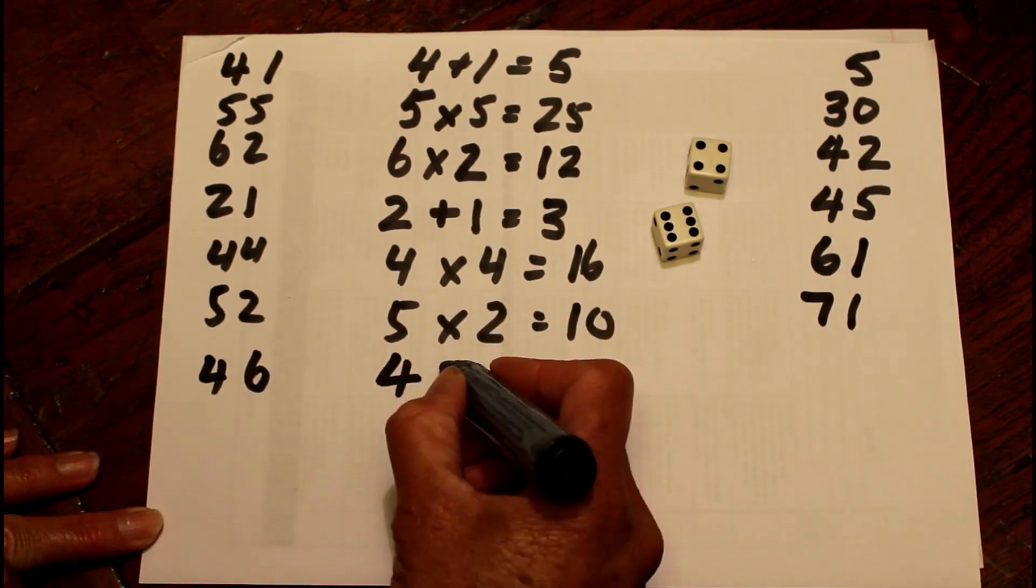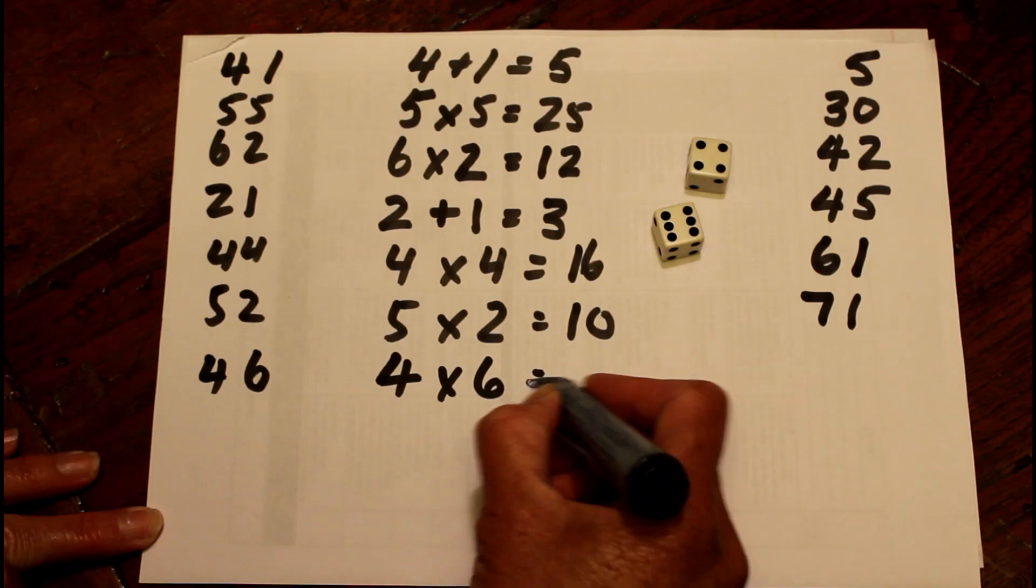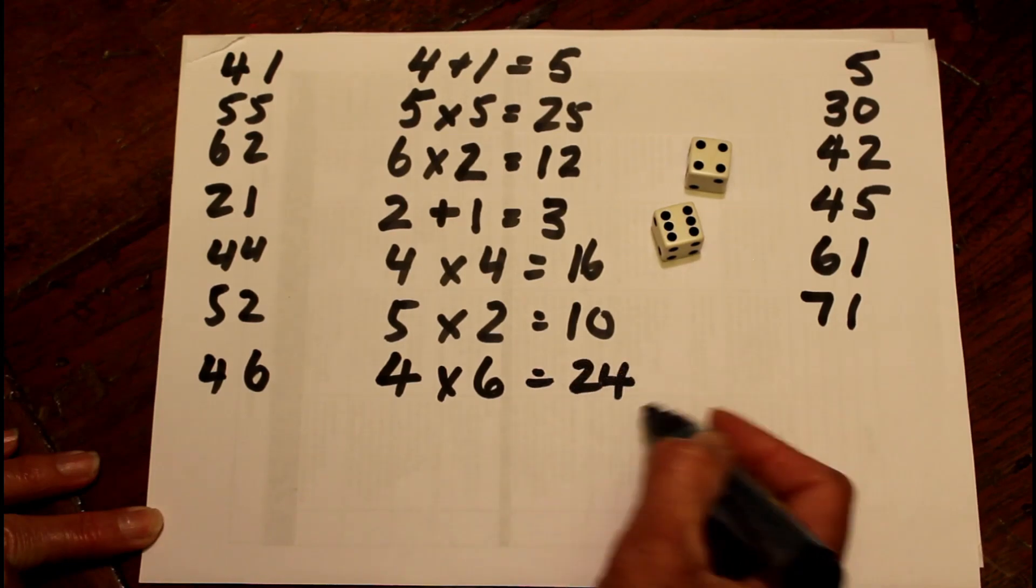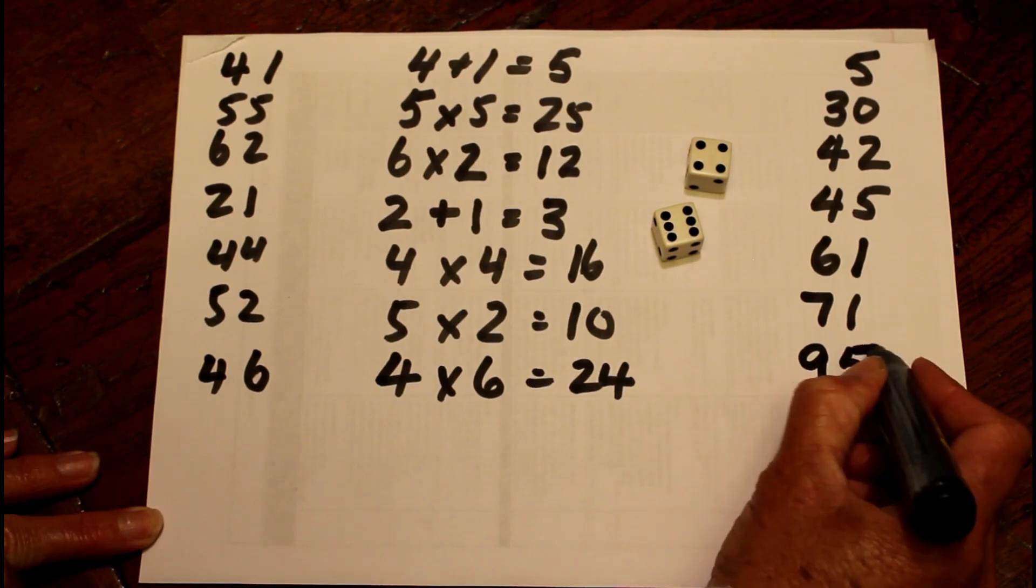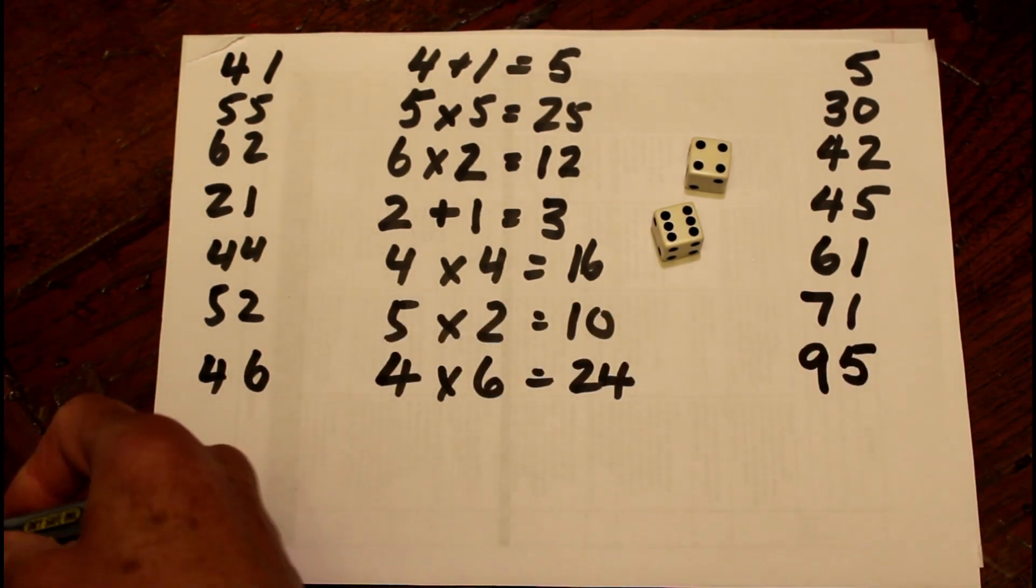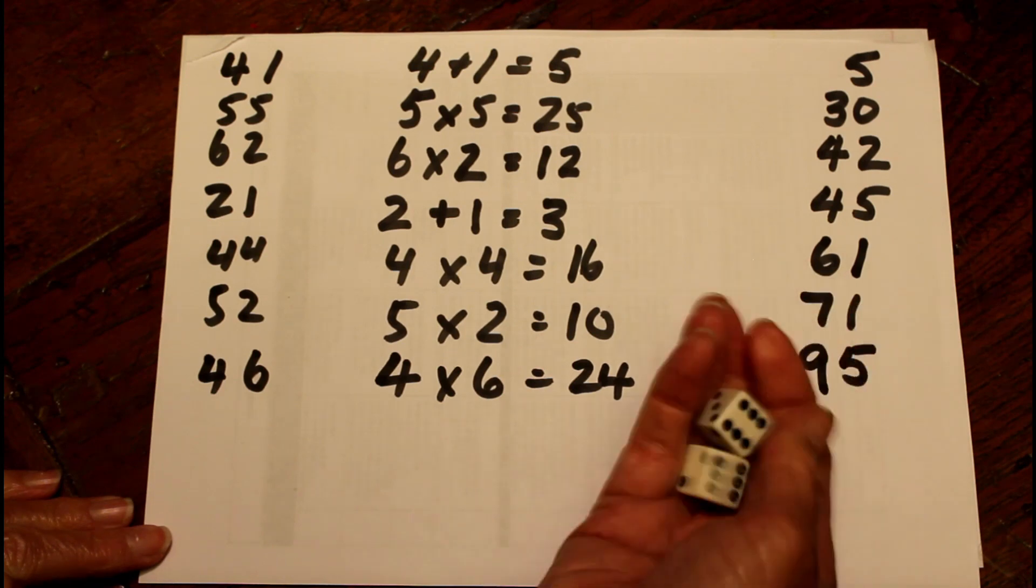So I'm going to do that. I'm going to do 4 times 6 equals 24. So 24 and 71 is going to give me 95. I've got 5 to get. I wonder if this next dice can help me out.